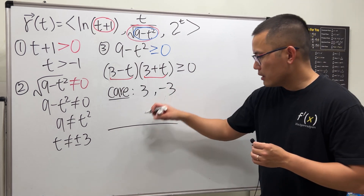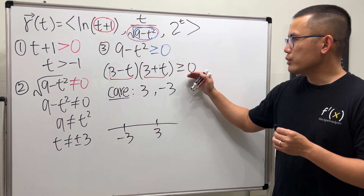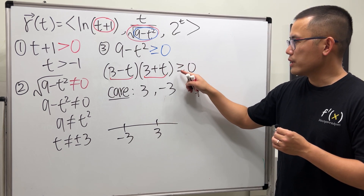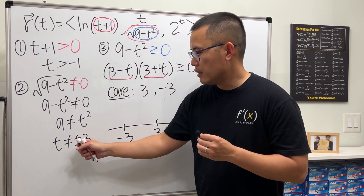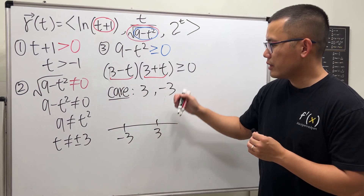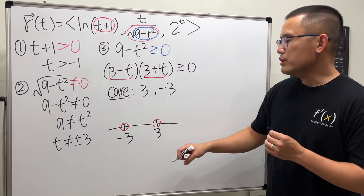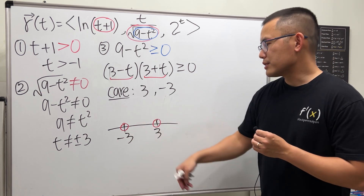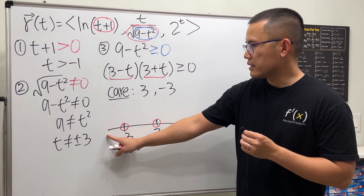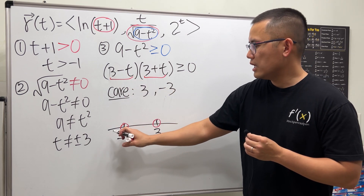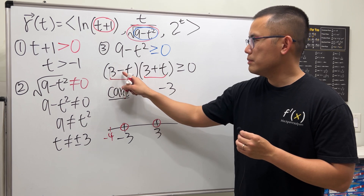Let's draw a number line: here is negative three, here is three. Normally we'd say t is greater than or equal to zero, so we should include these two values — but earlier we said t cannot be plus or minus three, so we use open circles at both. Now go ahead and pick a number less than negative three and plug it in.